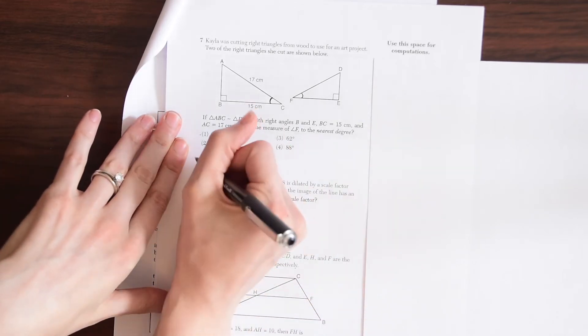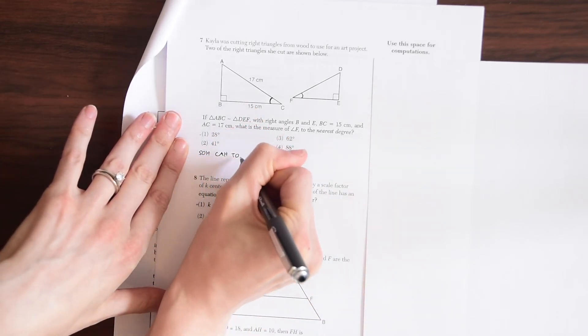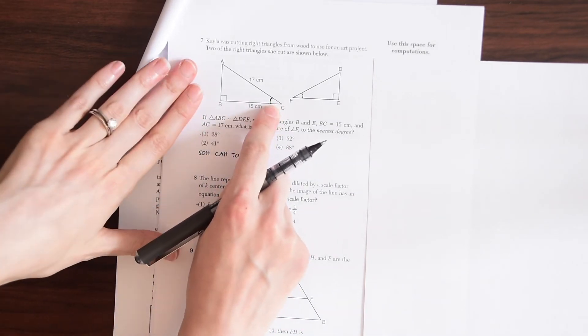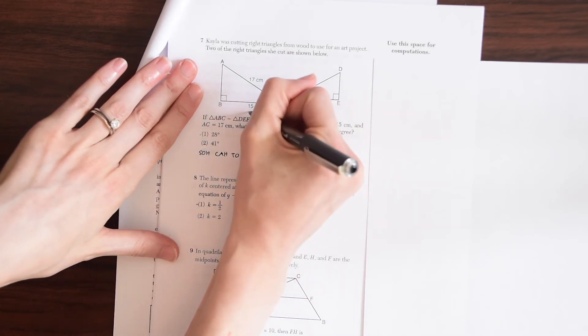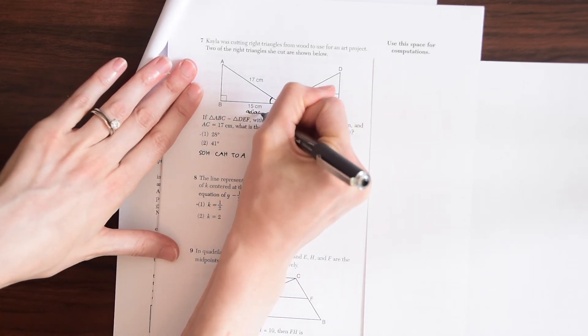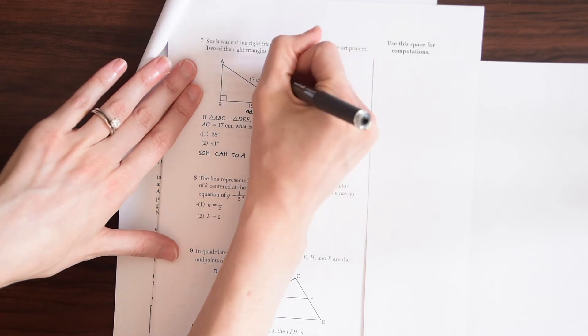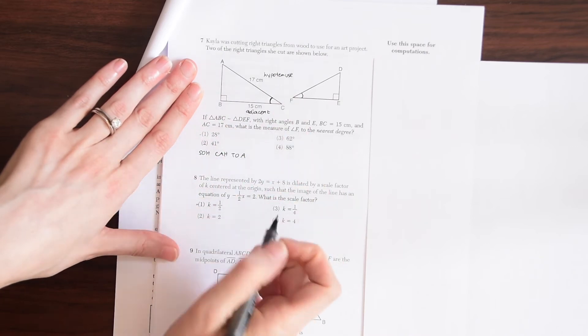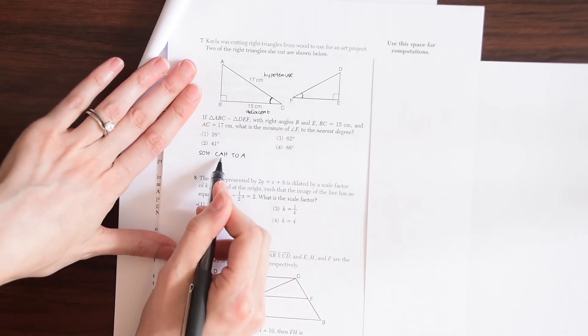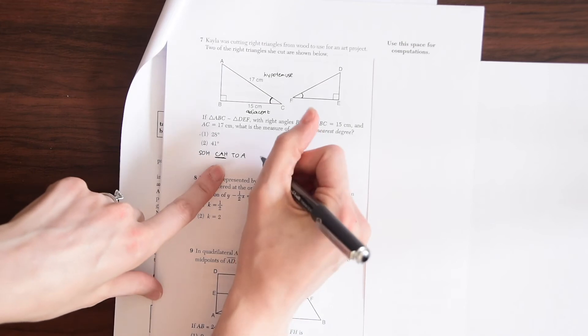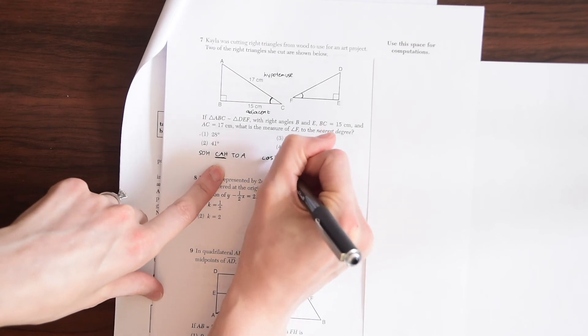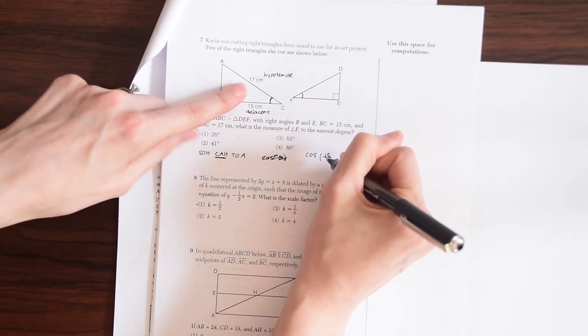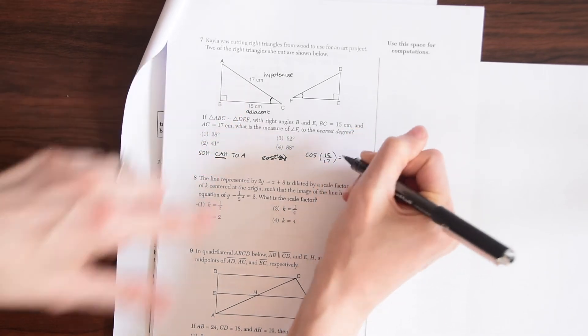So to solve this, we'll just write out SOHCAHTOA and look for the values that we have. So in relation to this angle, we have 15, which is the adjacent and 17 centimeters, which is the hypotenuse. So our two values that we have are the adjacent and the hypotenuse. So we know, we look at our SOHCAHTOA here, we know that we're going to be finding the cosine. So we're going to find the cosine of negative one of 15 adjacent over the hypotenuse 17 is going to give us our answer.